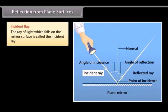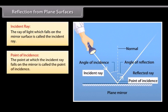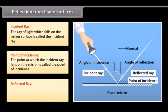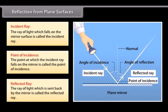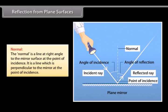Incident ray: the ray of light which falls on the mirror surface is called the incident ray. Point of incidence: the point at which the incident ray falls on the mirror. Reflected ray: the ray of light which is sent back by the mirror. Normal: the normal is a line at right angle to the mirror surface at the point of incidence. It is a line which is perpendicular to the mirror at the point of incidence.